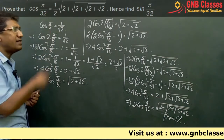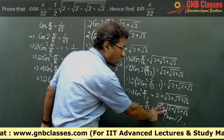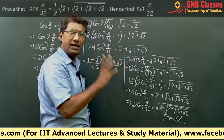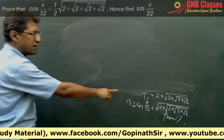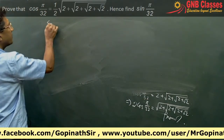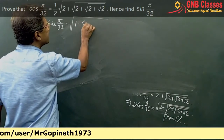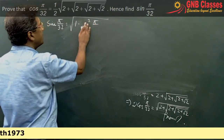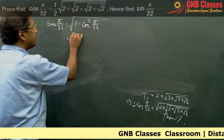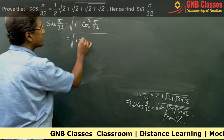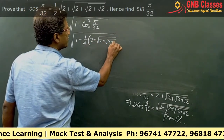The next part is to find the value of sin(π/32). From our result, cos(π/32) = (1/2)√(2 + √(2 + √(2 + √2))). So sin(π/32) = √(1 − cos²(π/32)) = √(1 − (1/4)(2 + √(2 + √(2 + √2)))).